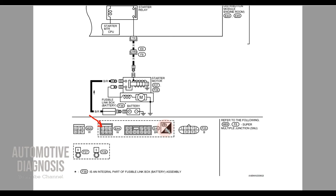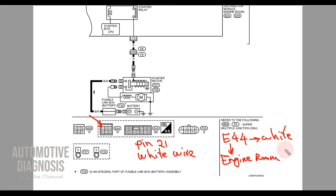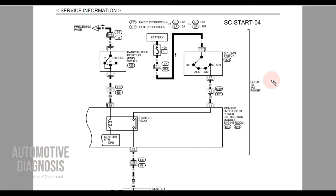So to summarize what we know for finding that pin: there is a pin number 21 connected to a white wire, it is inside connector E44, and this connector is a white connector located on the engine room fuse box. All that information came from the wiring diagram — it's super easy to find the connector now because you have the connector color, the connector code, the pin number, and the location of the pin.